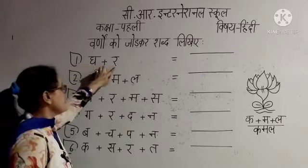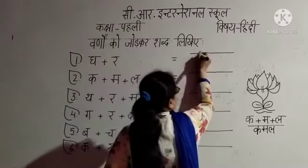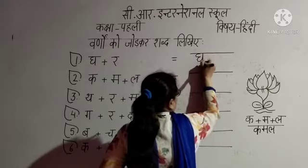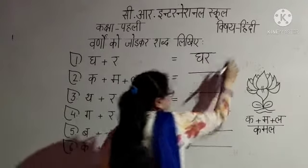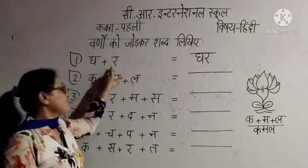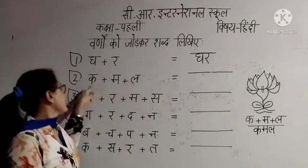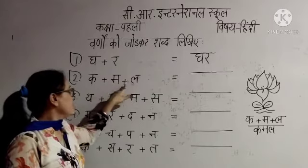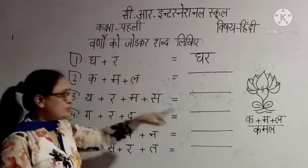Gha plus ra — तो gha plus ra क्या बनेगा? Gha, ra — क्या बनेगा? Ghar। क्या बनेगा? Ghar। Gha plus ra — Ghar। Next है: Ka plus ma plus la — क्या बनेगा?